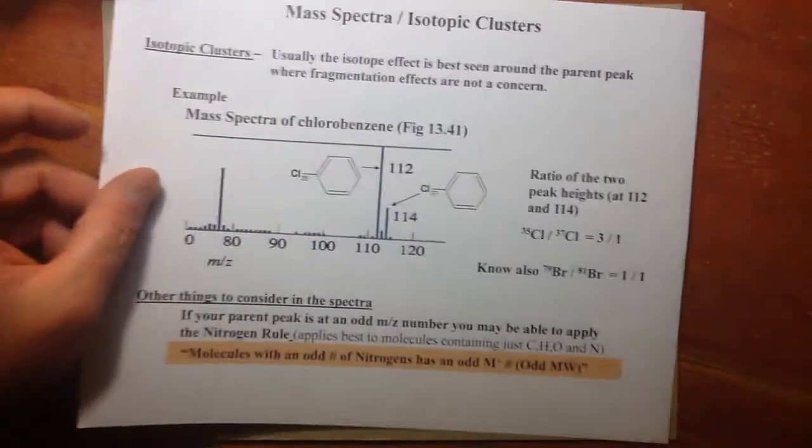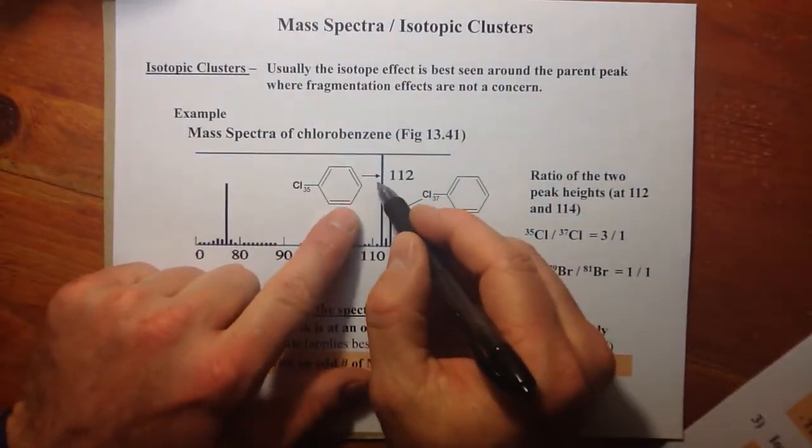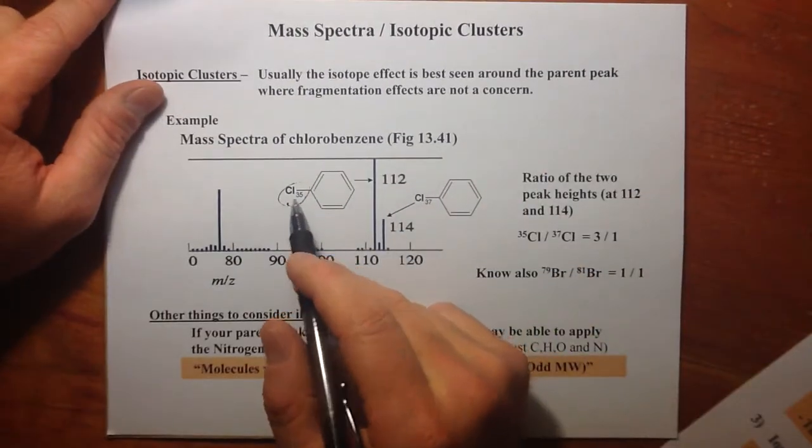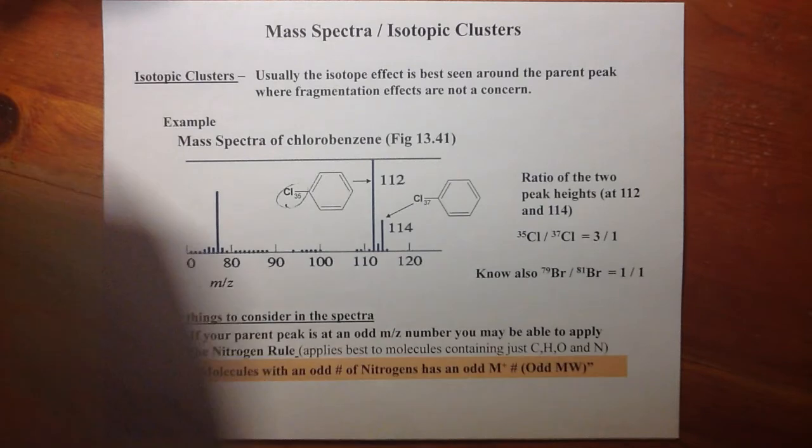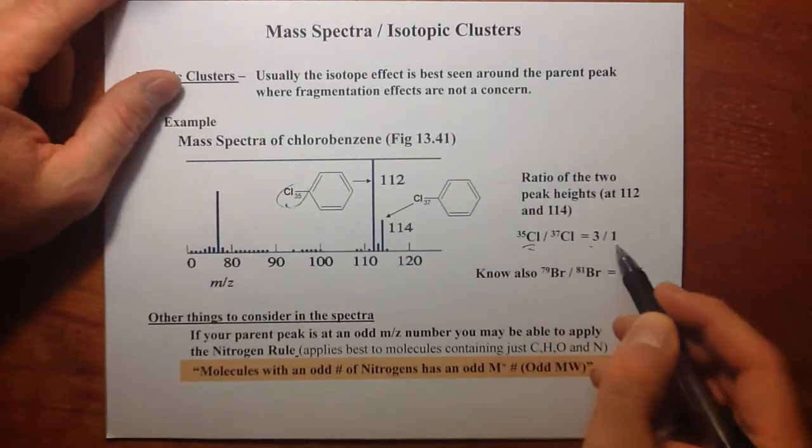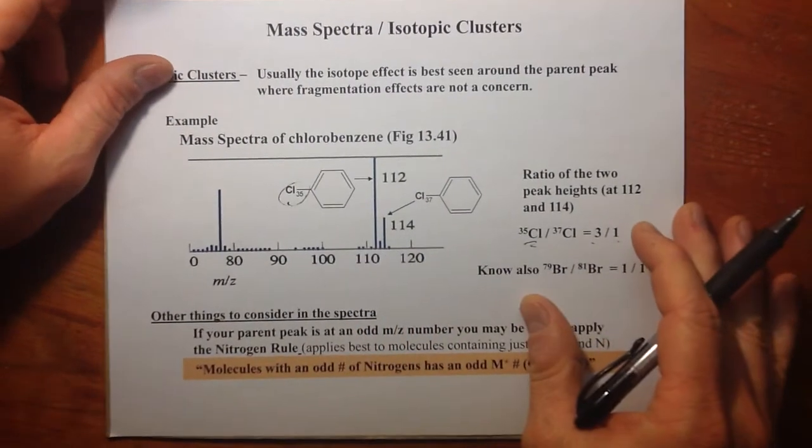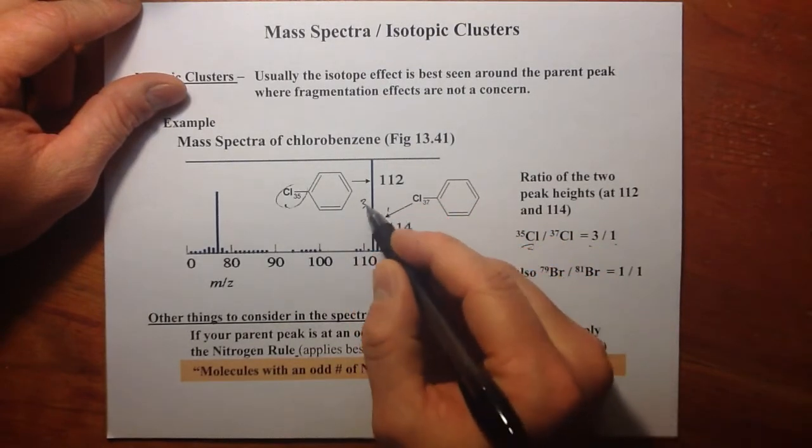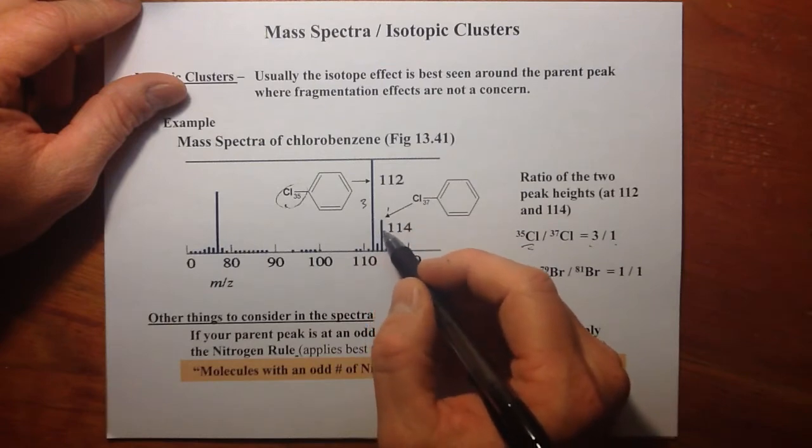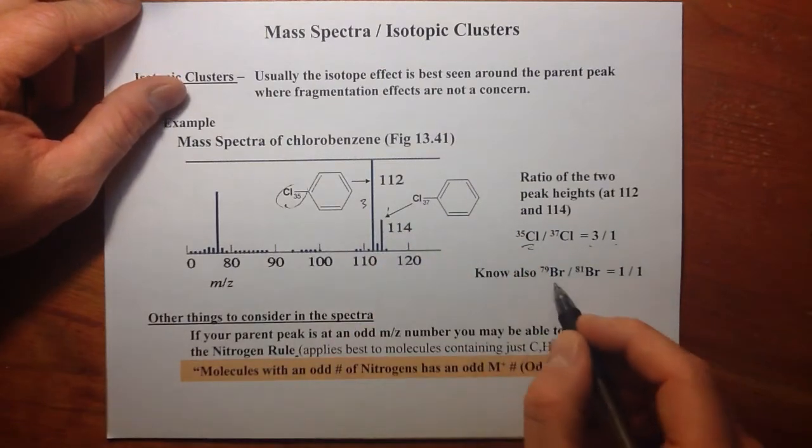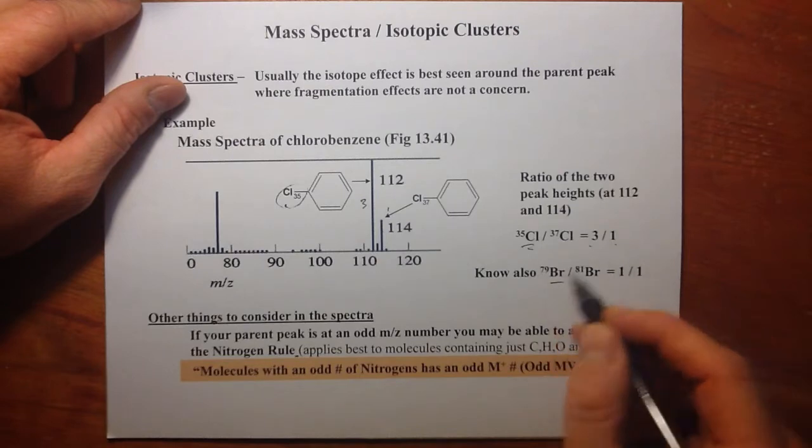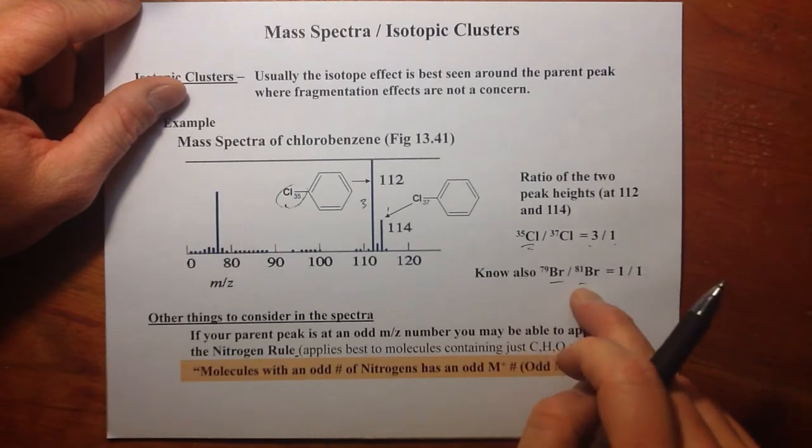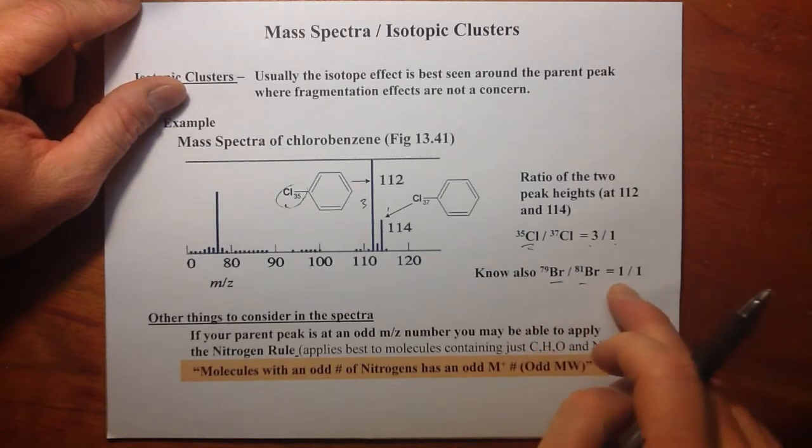Just an example of that. This is the only one I'll show. We said the Cl-35 is more prevalent as an isotope than the Cl-37. It's favored 3 to 1. So if we know we have chlorine, we can go to the parent peak region where the molecular ion shows up and expect a 3 to 1 ratio of the M plus to the M plus 2 peak. We can do the same thing for bromine. If we know we have bromine present, we can look for a 1 to 1 ratio.